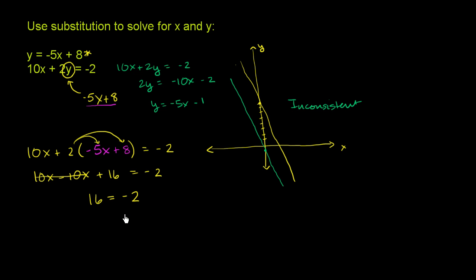And the telltale sign of that when you're doing it algebraically is you get something wacky like this. This is why it's called inconsistent. It's not consistent for 16 to be equal to negative 2. These don't intersect. There's no solution to both of these constraints. No x and y that satisfies both of them.